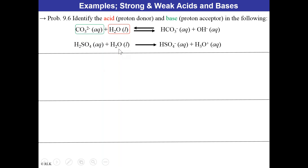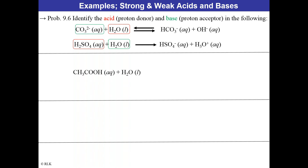If you had sulfuric acid plus water forming hydrogen sulfate and hydronium ion — sulfuric acid is already known to be an acid, so that's the acid and water is the base. Checking: hydrogen sulfate has two hydrogens initially; on the right it has only one. The lost hydrogen was picked up by water to form hydronium. That's a checks-and-balances approach — tracking where atoms come and go. Here we also have acetic acid plus water, which shows partial dissociation — a weak acid system.